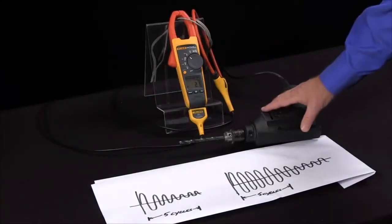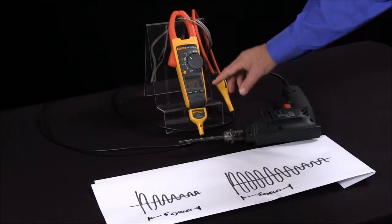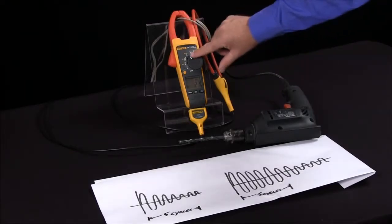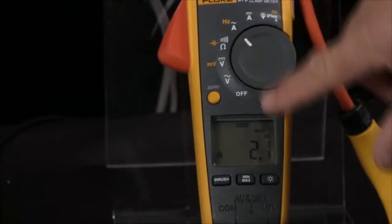How do I measure inrush with my Fluke clamp meters? To measure inrush, we turn the clamp meter to the amp function, and here we have the running current.